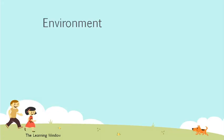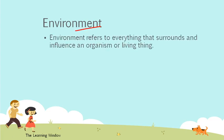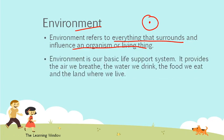Let's start with a short summary. If we talk about the environment, what do you understand from it? Environment refers to everything that surrounds us. We call it the environment — it influences an organism or a living thing, affecting and influencing our life. Environment is our basic life support system. It provides us the air we breathe, the water we drink, and the food we eat, and the land where we live.